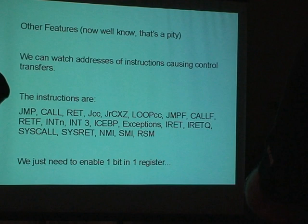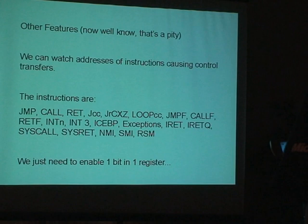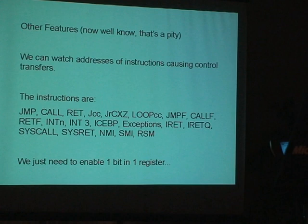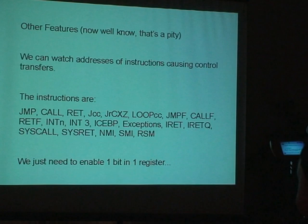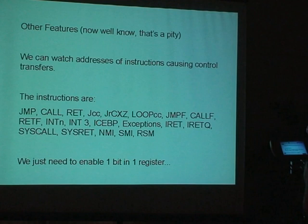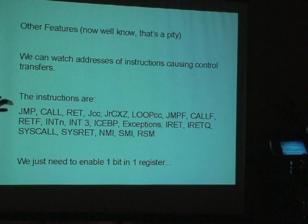There are other features in debugging which are not very well known. We can watch addresses causing control transfers. Everybody knows that it is very difficult to trace back the error. Tracing forward is extremely easy — stepping and so on. But what happens before the exception? How do you know the addresses before? We could jump in here from several points. This feature helps to record the last branches — changes of the instruction pointer — to trace back what happened before the exception.